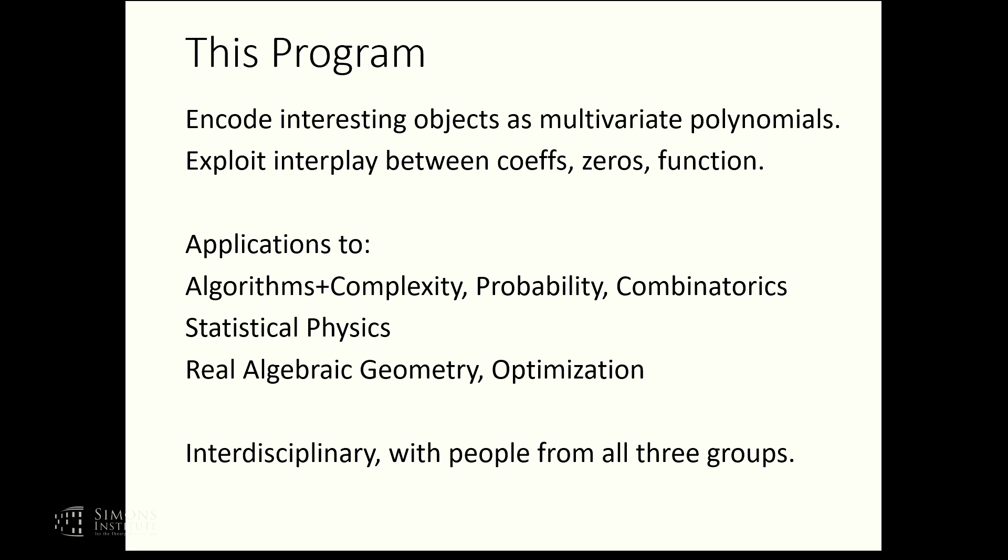The rough unifying idea of much of the research that's going on is you want to study some objects like a graph or maybe you have some convex set or something. You find some way to encode it as a multivariate polynomial. And then now this polynomial, it has coefficients, it has zeros, it has some properties as a function. And you use this interplay to prove interesting theorems about whatever it is you wrote at this polynomial.